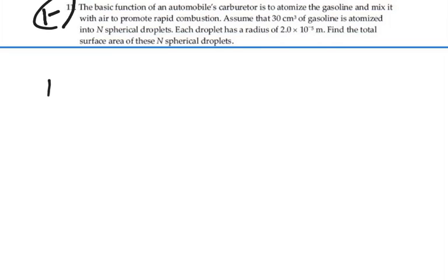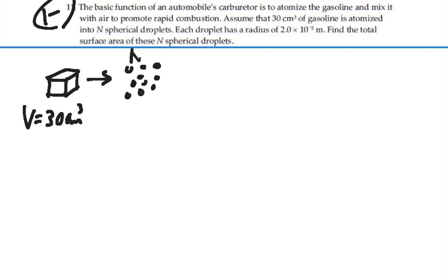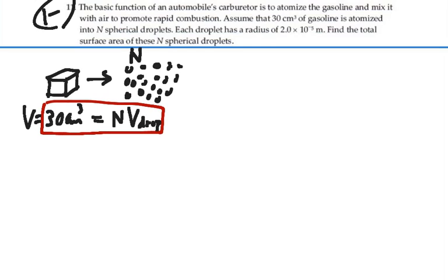Okay, so we start off with some volume of gasoline. We're told that volume is 30 cubic centimeters of gasoline. We want to change this and atomize it into a bunch of little spherical droplets. In fact, we're going to have N spherical droplets. Now the volume hasn't changed, so really our total volume will be equal to the number of droplets we have times the volume in each little droplet. And that will still be the same volume because we haven't lost any material in these atomized drops. So if I could find the volume of a droplet, then I could find the number N of how many droplets we have.